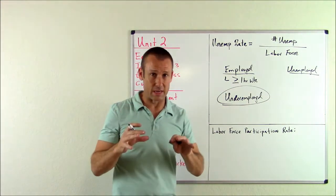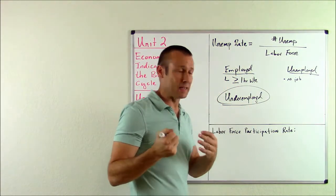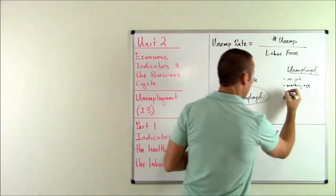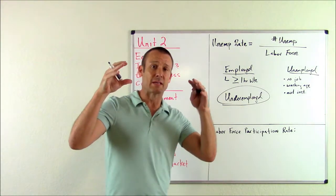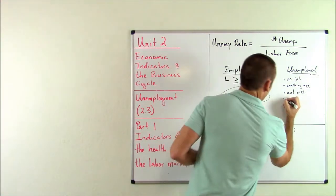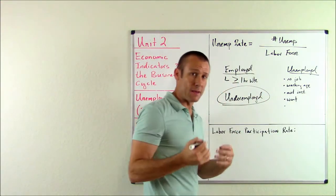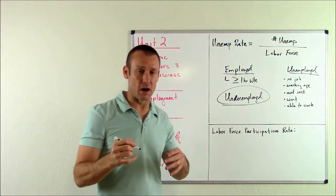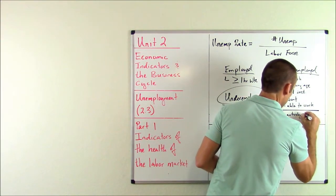The bigger issue is on the unemployed side. To be unemployed, you must have no job, be working age, not institutionalized — meaning not in prison or an asylum — and be part of the civilian, non-military labor force. You also have to want a job and be able to work. But that is still not enough. There's one more big criteria: you have to be actively seeking employment.